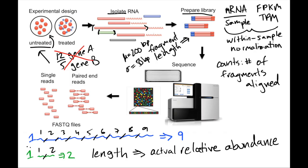Last time, we spoke about the concepts underlying within-sample normalization by looking at this RNA sequencing diagram, thereby understanding how length is a factor in order to determine actual relative abundance as strategies such as FPKM and TPM try to do.